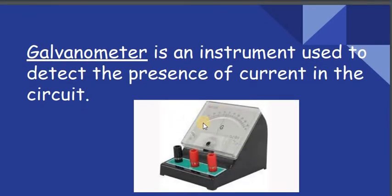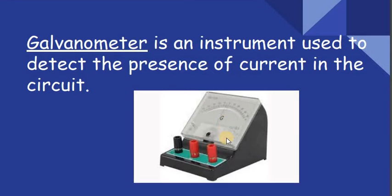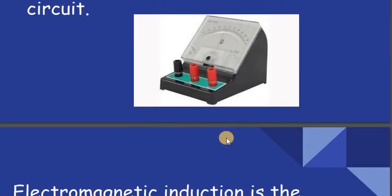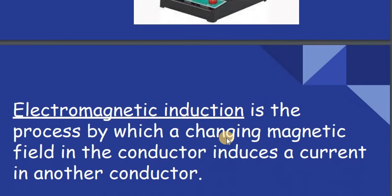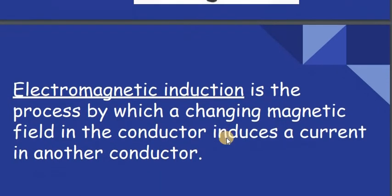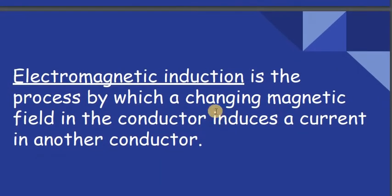The galvanometer is an instrument used to detect the presence of current in the circuit. There will be a deflection in the galvanometer if current passes through the circuit.